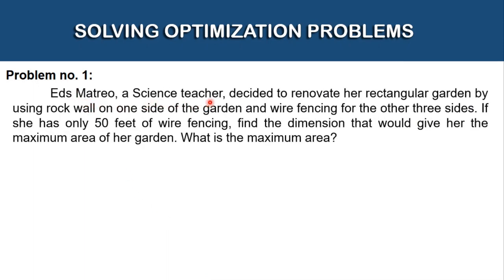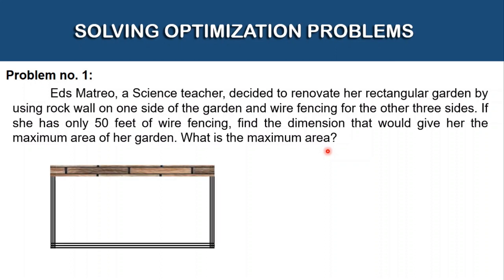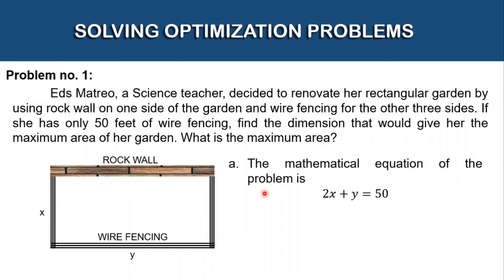Ed's Matreo, a science teacher, decided to renovate her rectangular garden by using rock wall on one side of the garden and wire fencing for the other three sides. If she has only 50 feet of wire fencing, find the dimension that would give her the maximum area of her garden, and what is the maximum area. First, let's illustrate the garden. One side is made of rock wall and the other three sides are wire fencing. Let's say this side is y and this side is x.